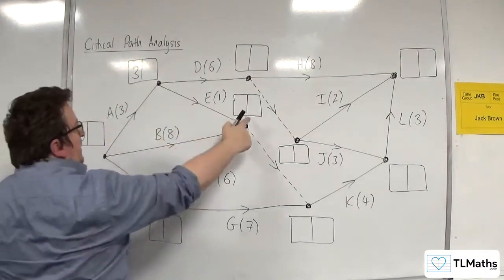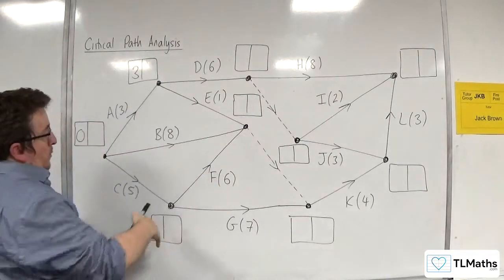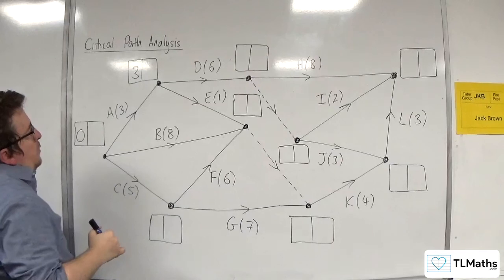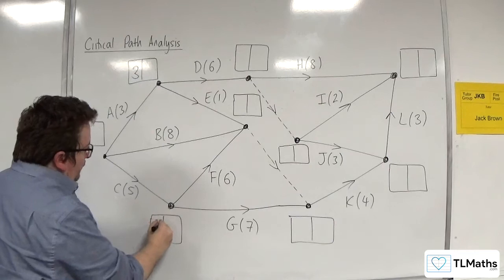And we're not going to go to this one next because there are two routes going in, or three routes going in rather. So we're not going there yet. We'll go to this one next because there's only one route going in there, so that goes in 5.